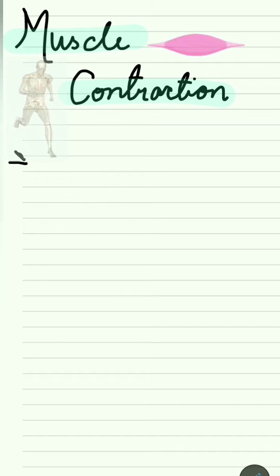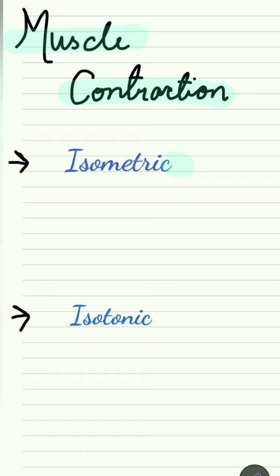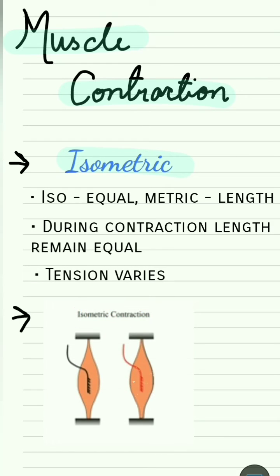Muscle contractions are classified either as isometric or isotonic. Most muscle contractions are a combination of both. We will look at isometric contraction first. 'Iso' means equal, 'metric' means length, so during this contraction the length of the muscle remains the same throughout the process.